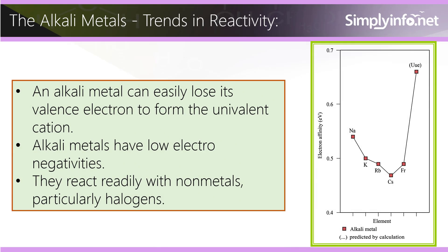An alkali metal can easily lose its valence electron to form the univalent cation. Alkali metals have low electronegativities. They react readily with non-metals, particularly halogens.